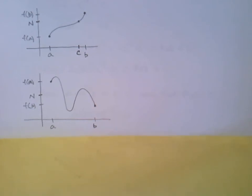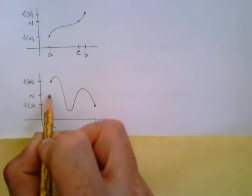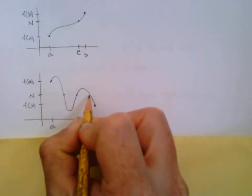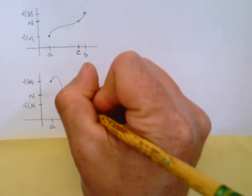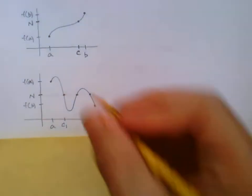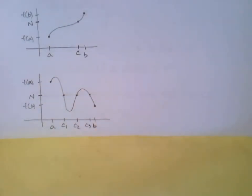When you look at N in this second drawing, does there exist a c between a and b such that f(c) = N? Yes — in fact for this drawing it happens three times. All three of those points have the same y-value of N, so we could call them c1, c2, and c3. The theorem says it happens at least once; it could happen more than once, but it definitely will happen at least once.